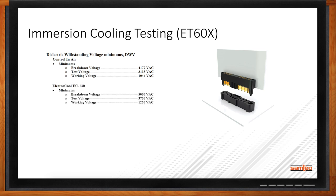Looking at the ET60X connector set again for DWV — dielectric withstanding voltage: the breakdown voltage in air is approximately 4,100 VAC, versus in ElectriCool you're looking at 5,000 VAC breakdown voltage — essentially 800 more VAC. So with both DWV and CCC, you're getting quite a bit more performance and capability out of a connector set when you look at it in an immersion cooled environment.